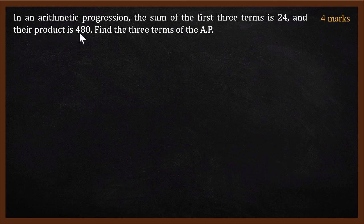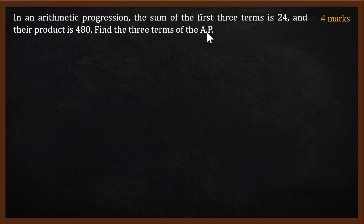This is an interesting bit. Not only have they given the sum, but they have also given a product. The product of the first three terms is 480. We have to find the three terms of the AP — those three terms which add to 24 and multiply to 480.